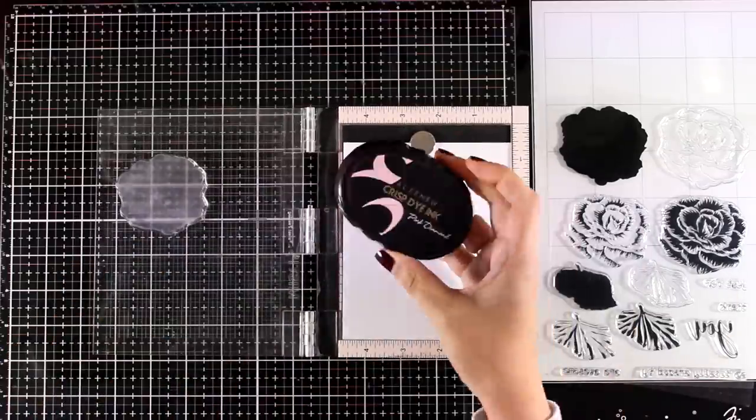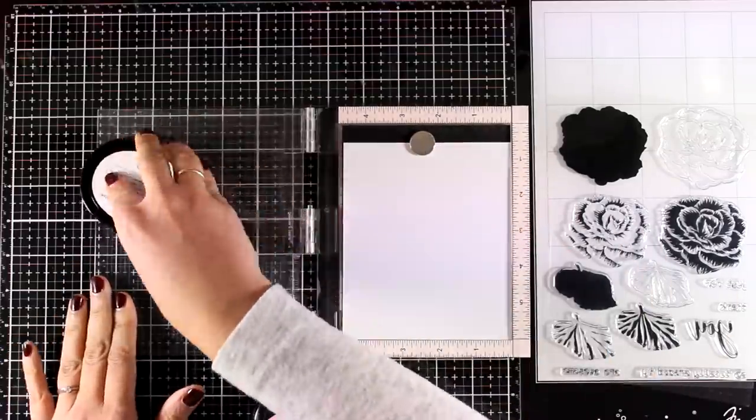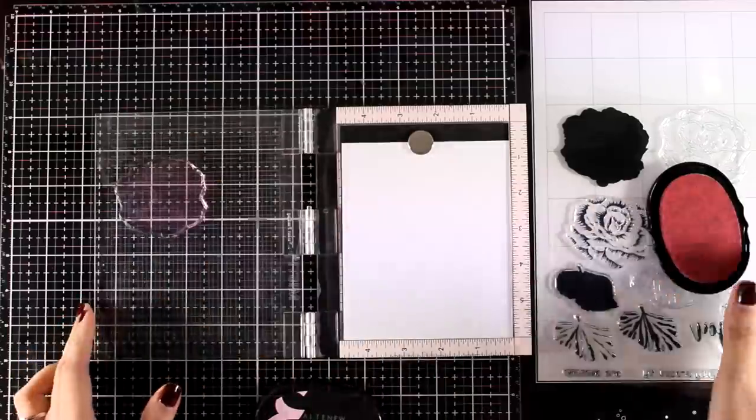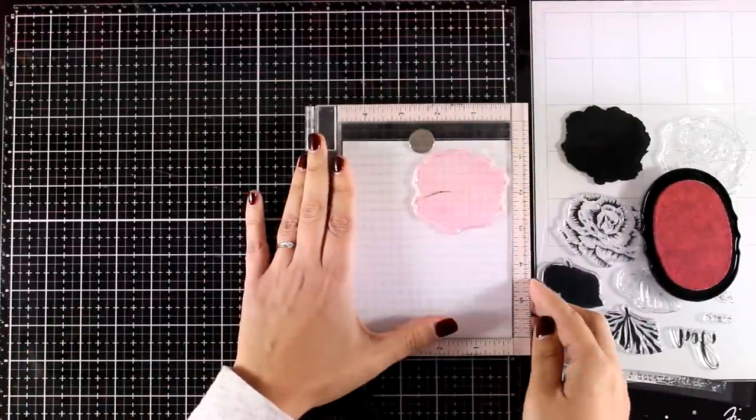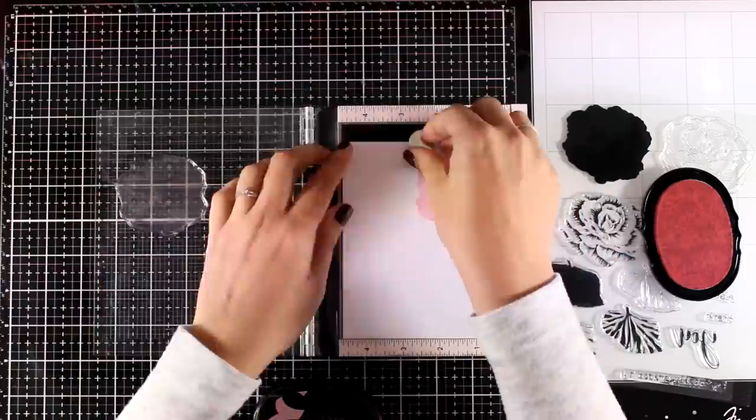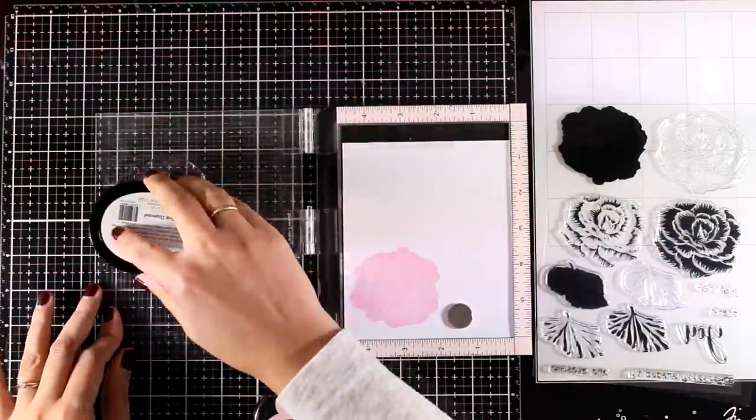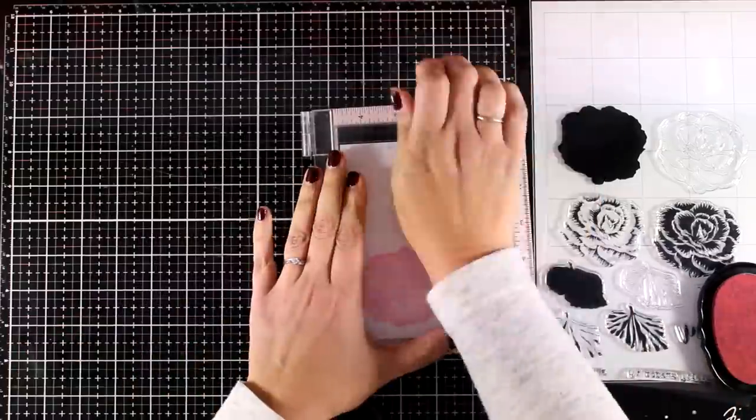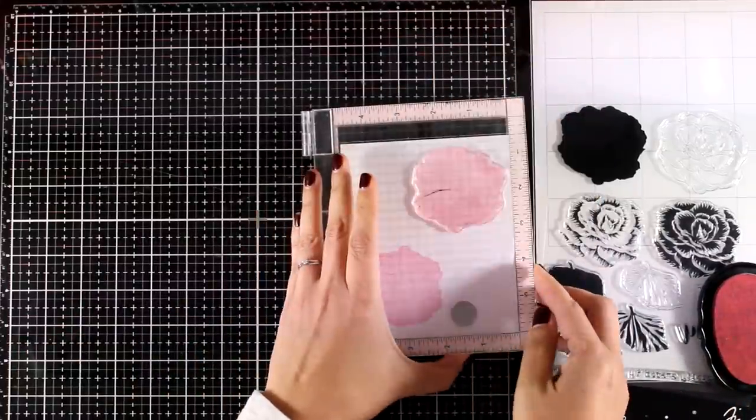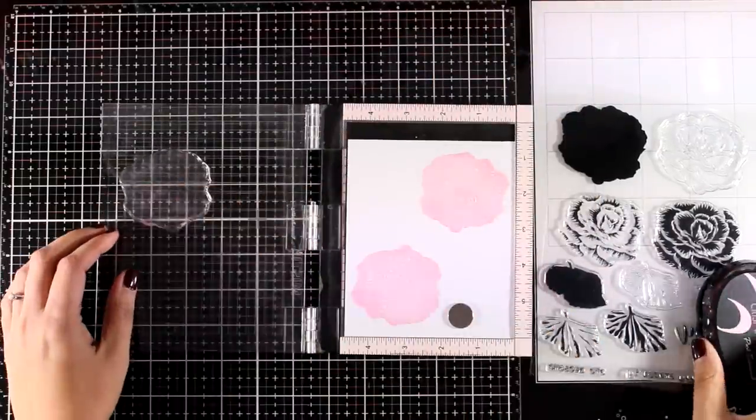So you can see now that it's not as clear as it was before. It looks kind of foggy and that's exactly the look that you want to get a nice solid impression. I decided that I will use two of those flowers for my focal point so I'm going to turn the page and stamp this one more time. I am using pink diamond here.